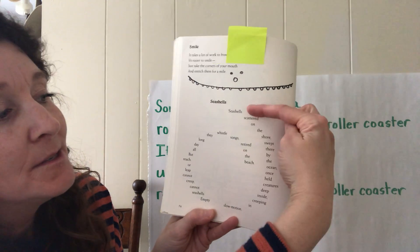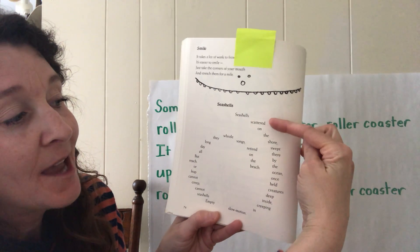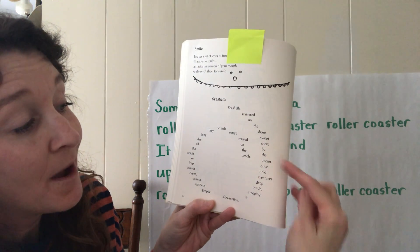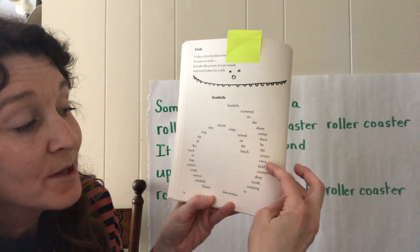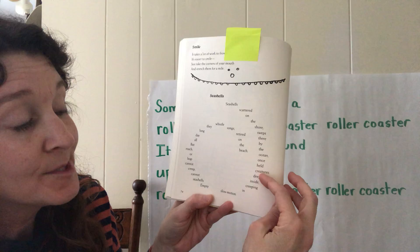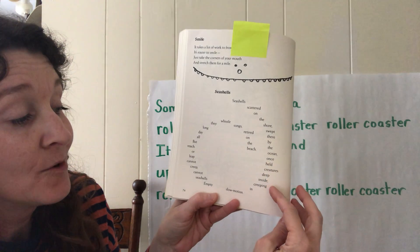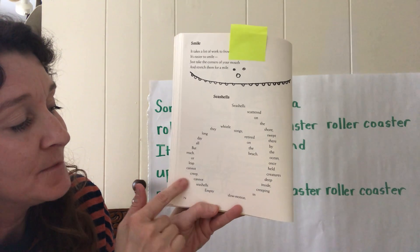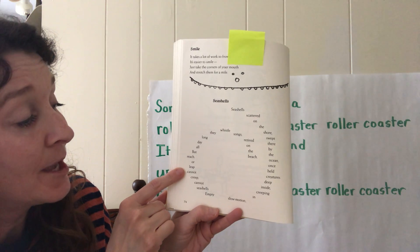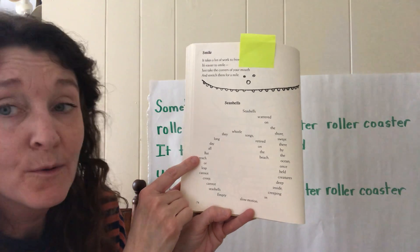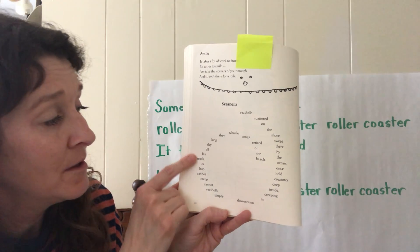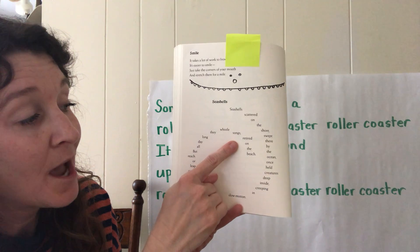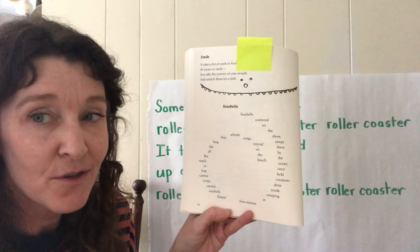Seashells. Seashells scattered on the shore, swept there by the ocean, once held creatures deep inside, creeping in slow motion. Empty seashells cannot creep, cannot leap, or reach, but all day long they whistle songs retired on the beach.